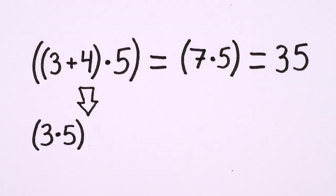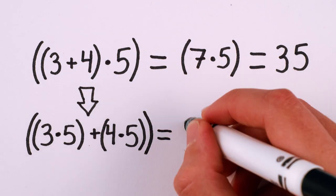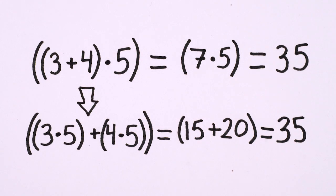That is, 5 times 3 plus 5 times 4 equals 15 plus 20 equals 35. The same answer. And how do we know multiplication distributes?